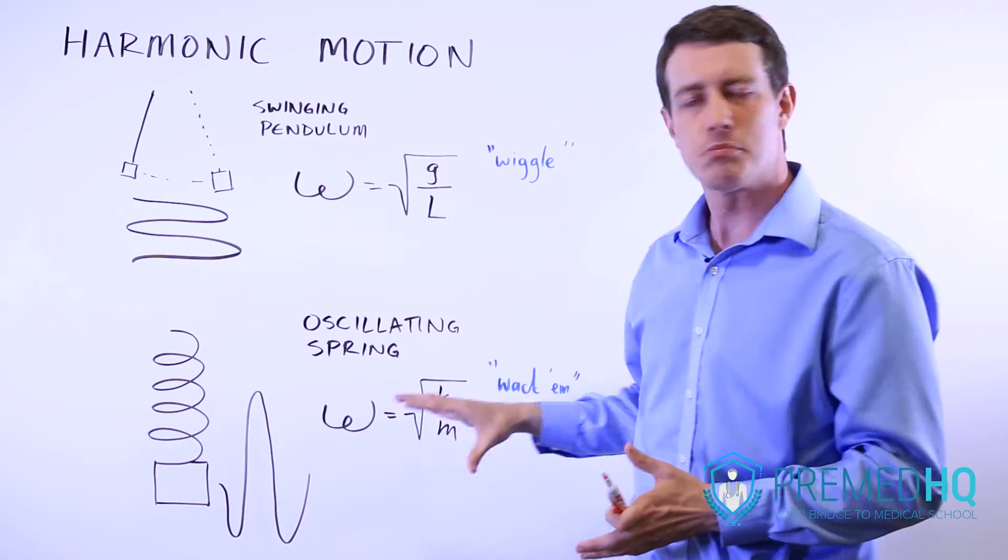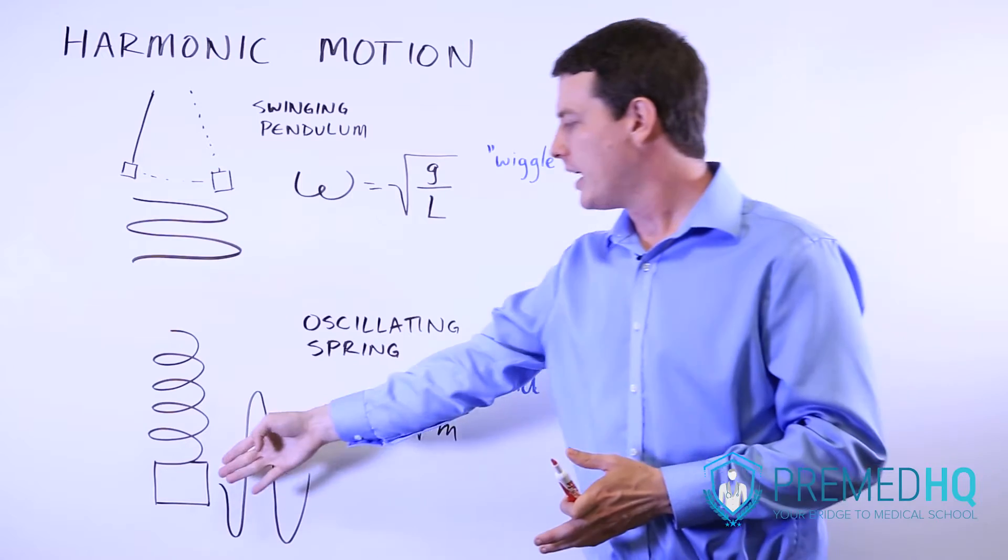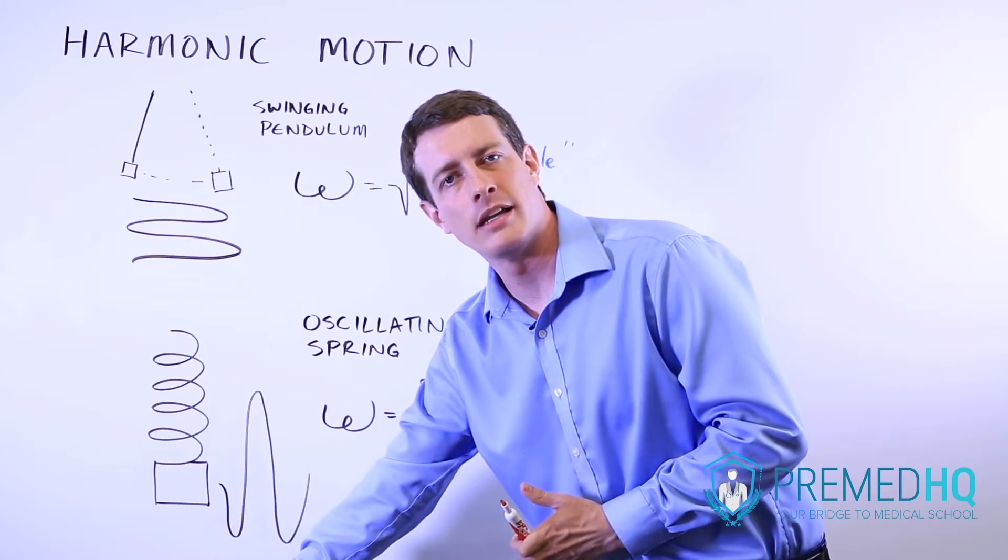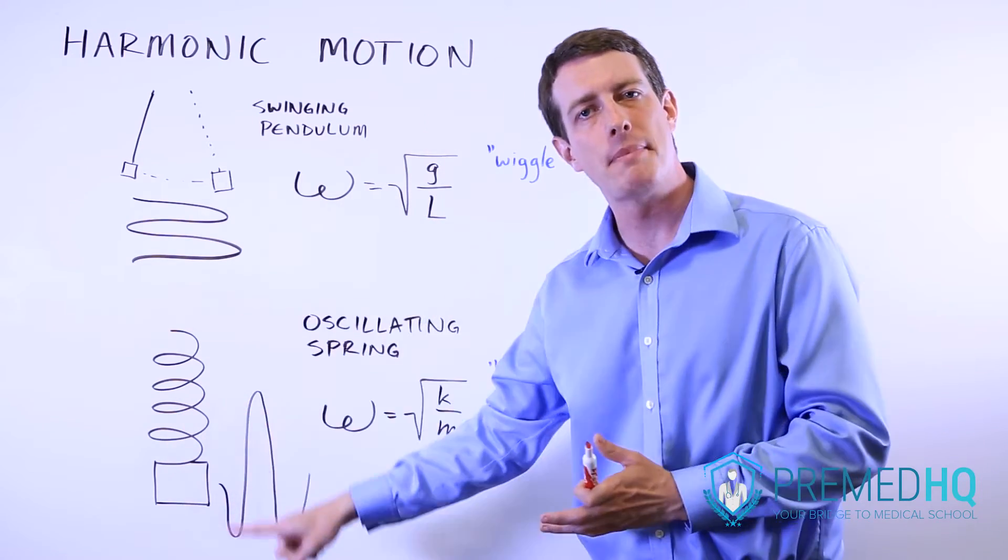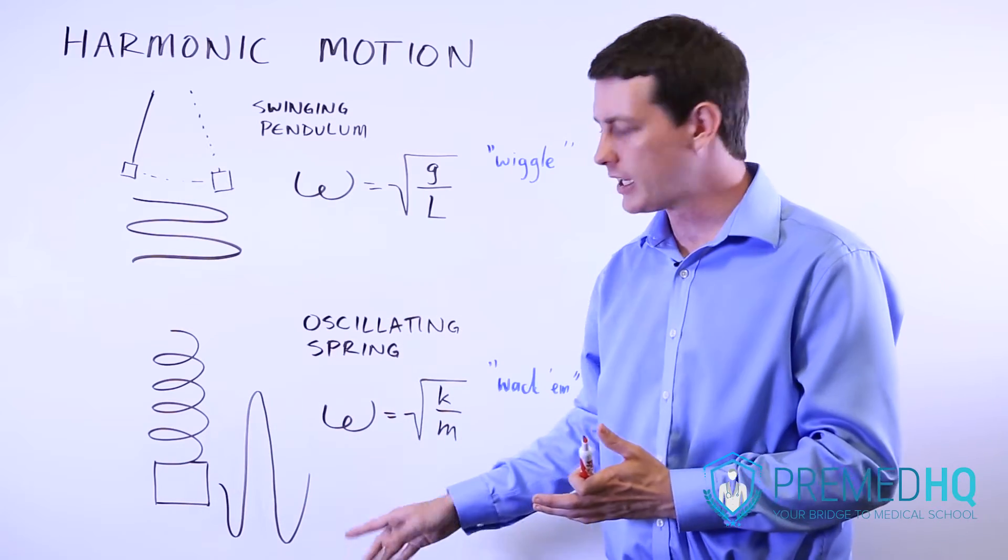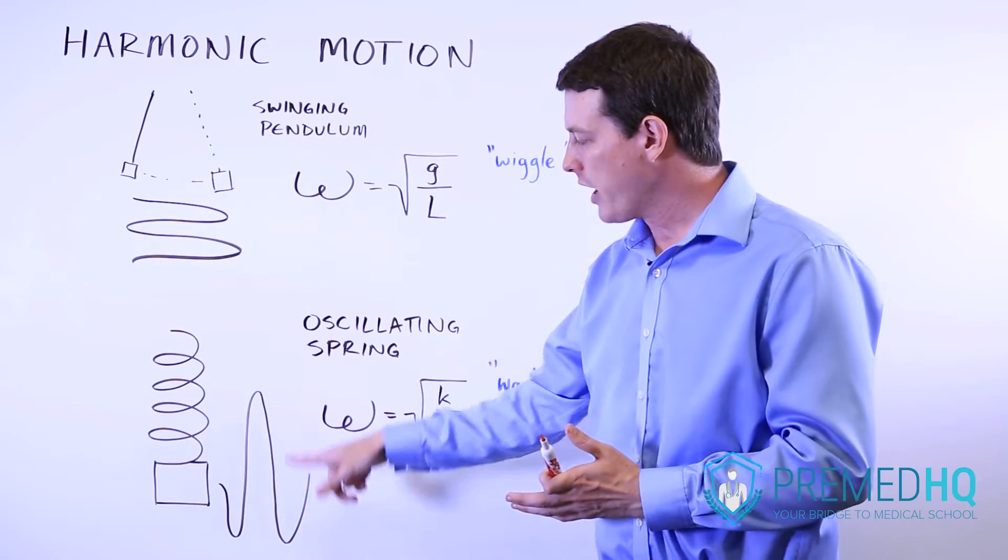And similarly, if you had a spring that was oscillating, if you had a mass attached to a spring, stretched that spring down and then released it, the spring would go up and down and up and down like that to produce a waveform like this.